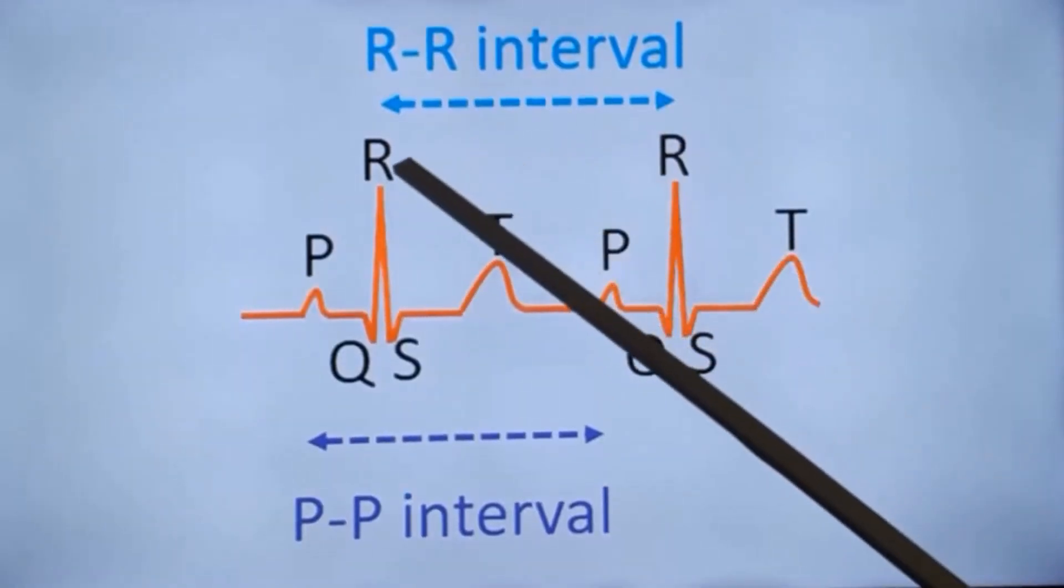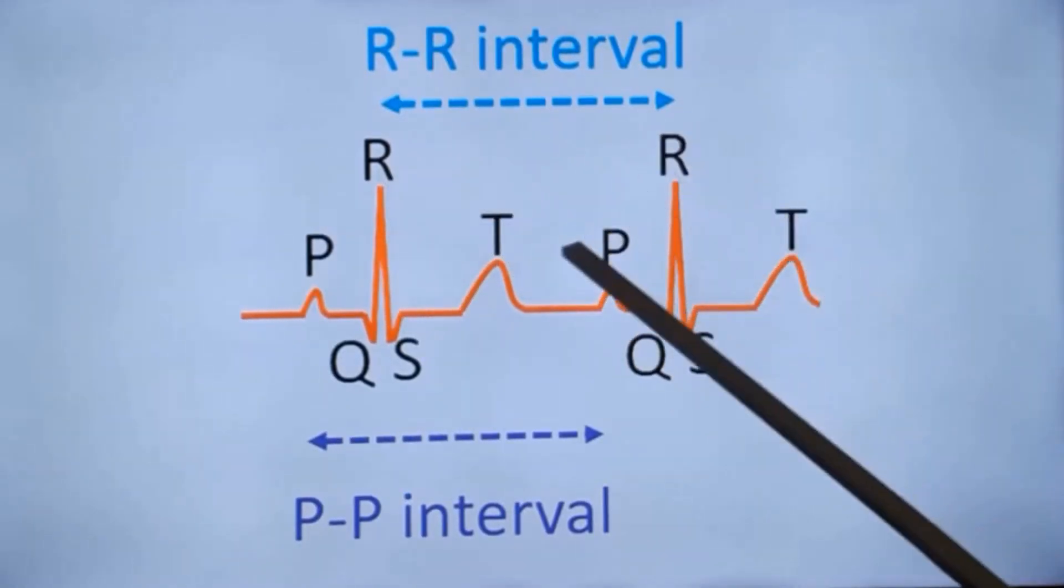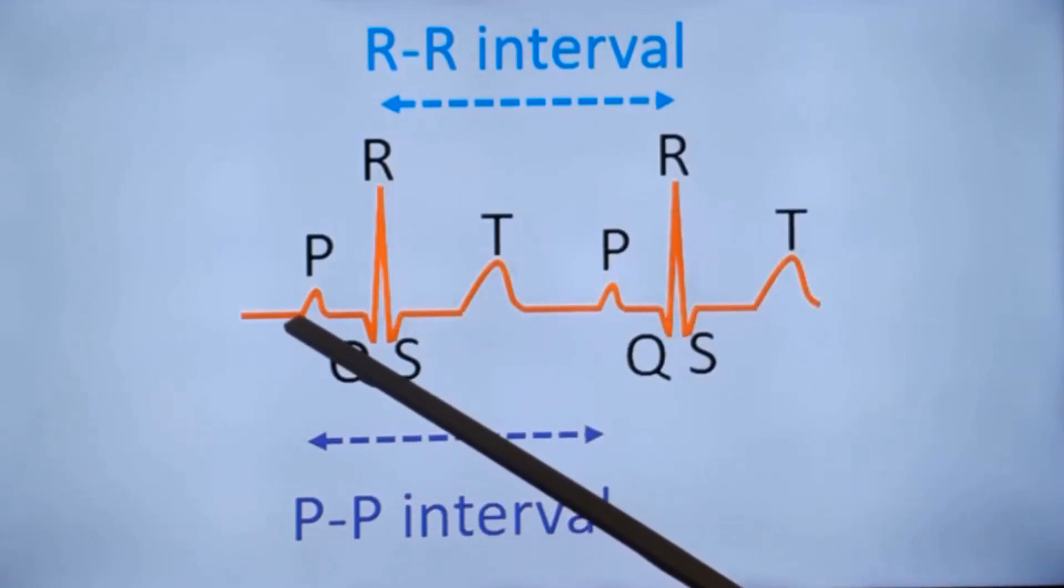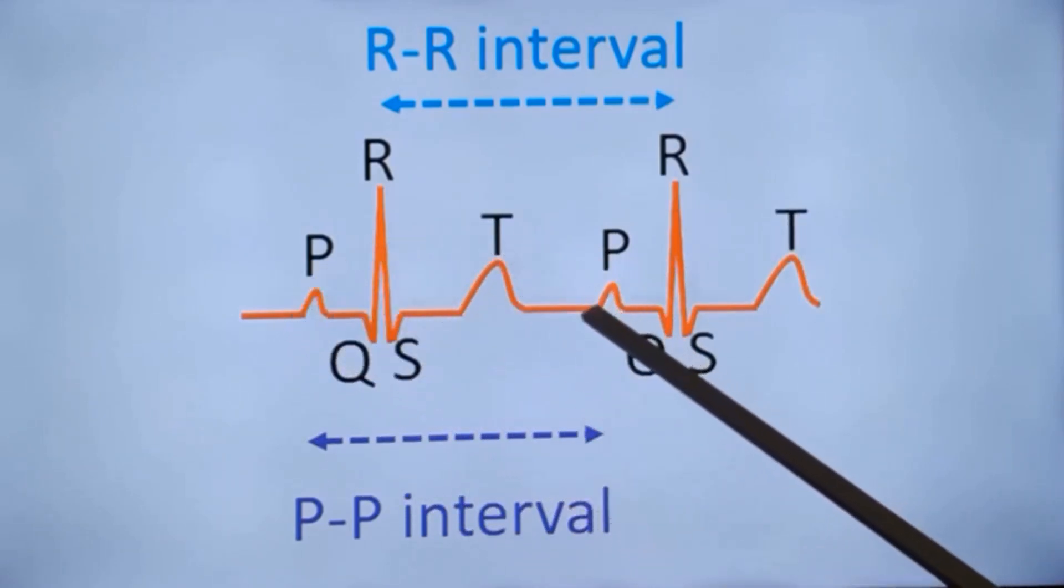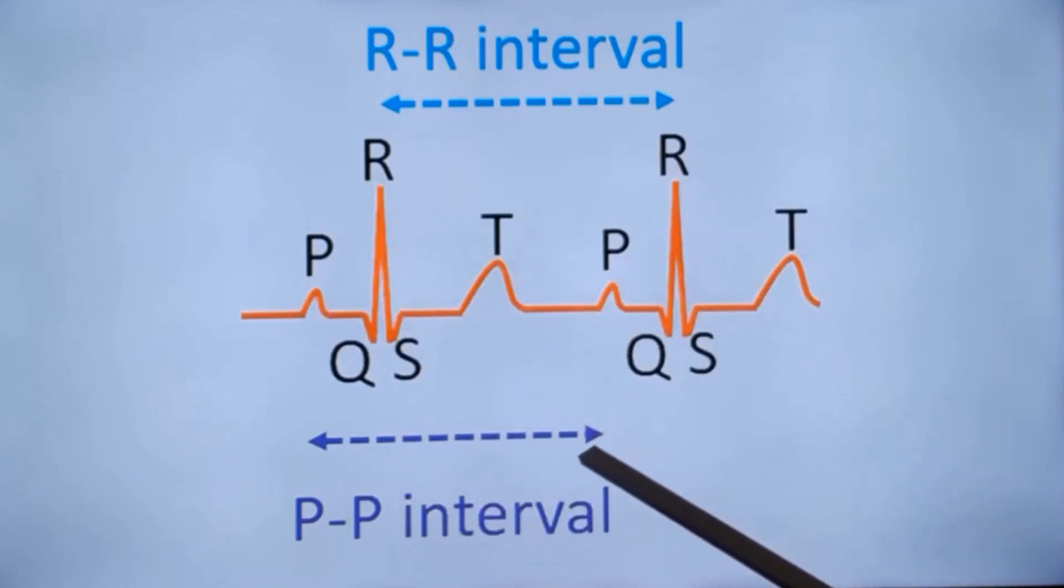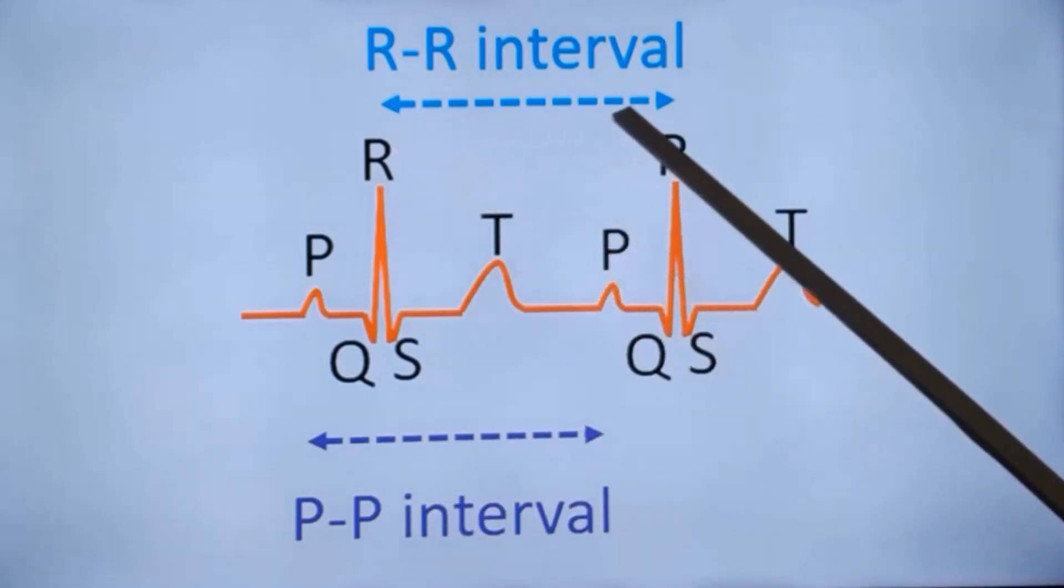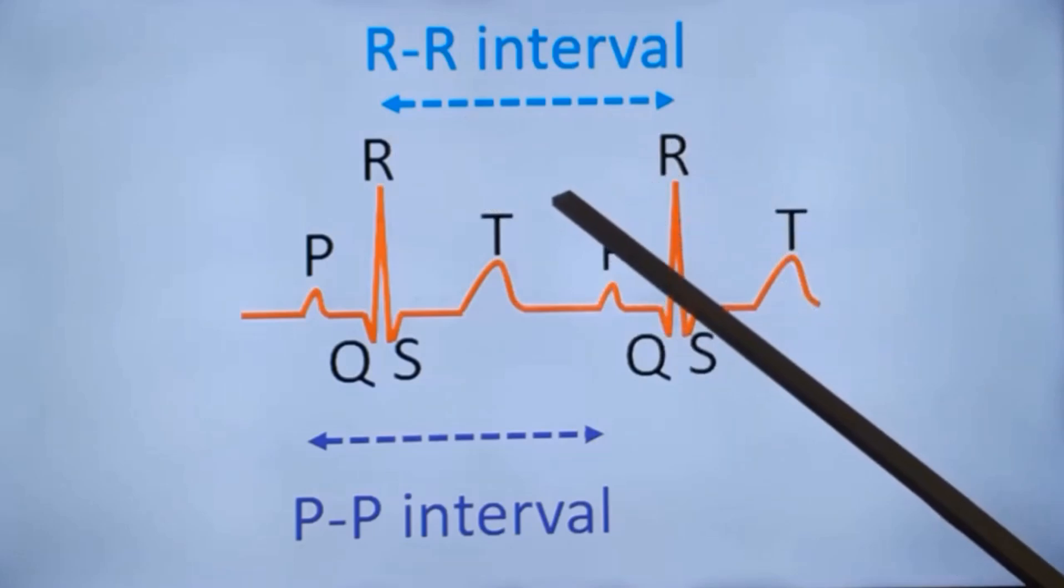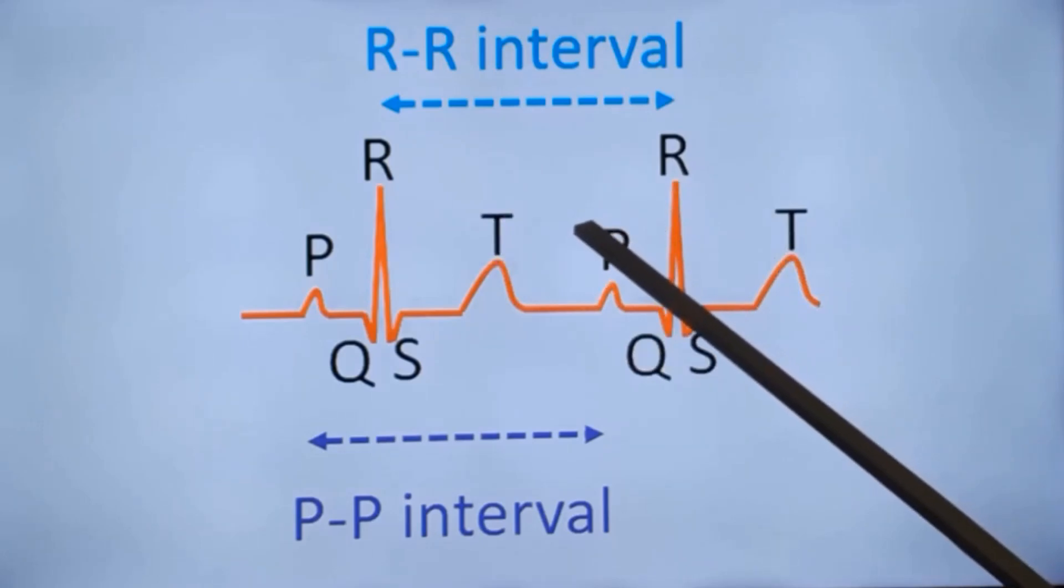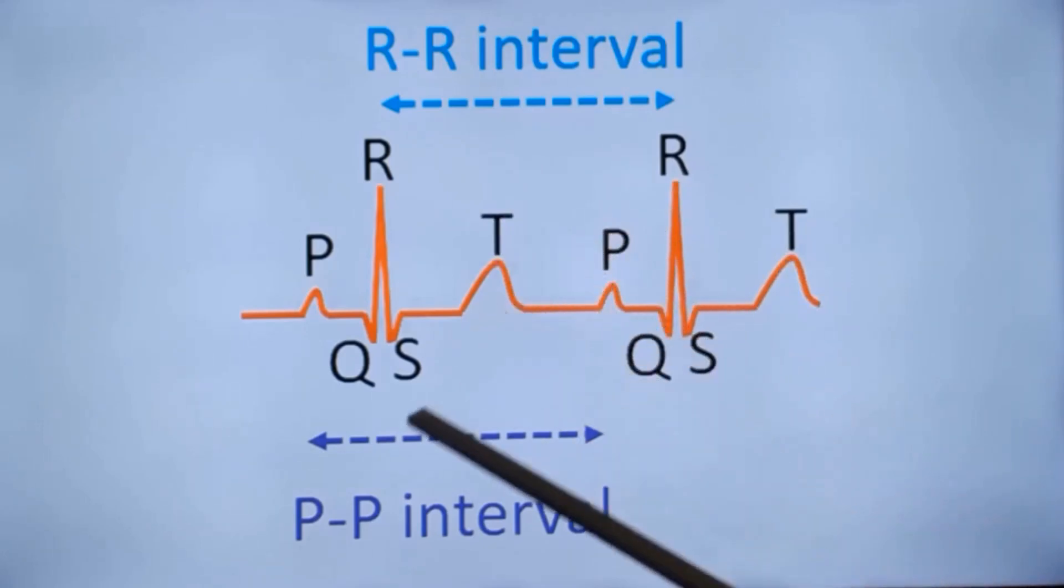This is the RR interval, interval between peaks of two R waves. PP interval from the onset of one P wave to the onset of the next P wave. From the PP interval, you can calculate the atrial rate. From the RR interval, you can calculate the ventricular rate. Usually we calculate RR interval and calculate the ventricular rate and say that it is the heart rate, presuming that both are equal.